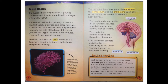The average brain weighs about 3 pounds, or 1.4 kilograms. It looks something like a large, soft, wrinkly walnut. For the brain to function properly, it needs a constant supply of oxygen and other materials. A network of blood vessels constantly supplies oxygen to the cells of the brain. If the brain goes without oxygen for even a few minutes, it may suffer permanent damage. The brain sits inside the skull. The skull is a hard, bony covering that protects the brain and prevents brain damage.